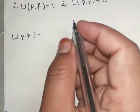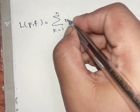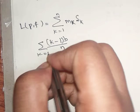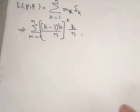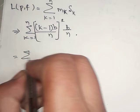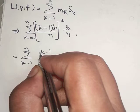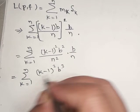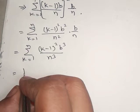Now going for L(P, f): L(P, f) = summation k=1 to n of mk·Δk. The small mk value is (k-1)·b/n, and since f(x) = x² we square it: mk = ((k-1)b/n)². With Δk = b/n, we get summation k=1 to n of (k-1)²b²/n² · b/n = summation k=1 to n of (k-1)²b³/n³.